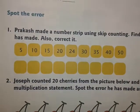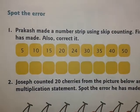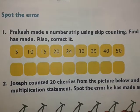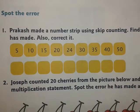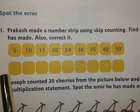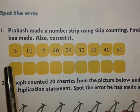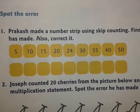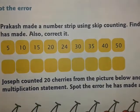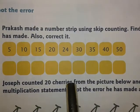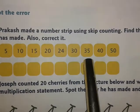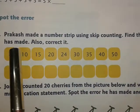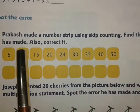Next is spot the error. This is the most interesting part that you enjoy. Now the first question here is: Prakash made a number step using skip counting. Find the mistakes he has made.